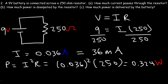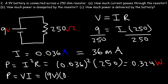Part C: How much power is delivered by the battery? Using P equals V times I, the voltage is 9 volts and the current is 0.036 amps, giving 0.324 watts — the same result. This makes sense because the power delivered by the battery must equal the power dissipated by the resistor; the battery delivers energy and the resistor absorbs it.